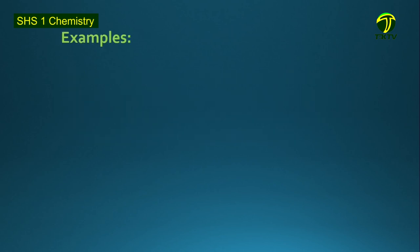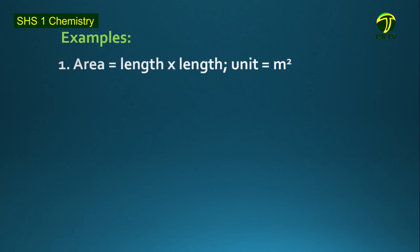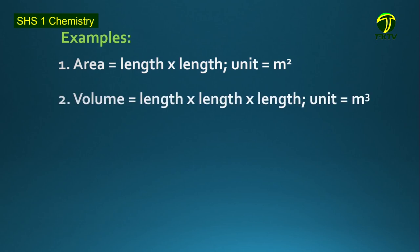We know we have area. When we want to measure area — let's take a square or a rectangle — we have area equals length times length. We normally say length times breadth, but whatever the case, we are measuring length, and length has a unit of meter. So length times length gives us meter squared; the unit for area is meter squared. Then we have volume, which is area times height. Area is length times length, and height is also length, so we have length times length times length, giving us the unit meter cubed. You see that we are obtaining this by multiplication.